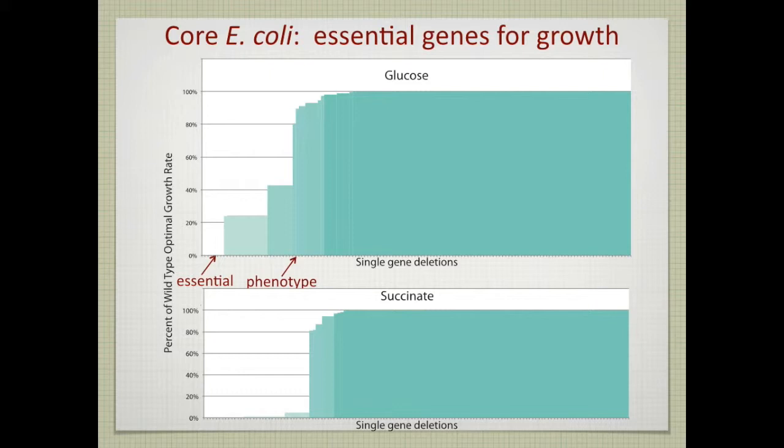Then you get a group of numbers from the optimization that look like this. They are smaller than what the wild type grows at. So removing the gene is predicted to retard growth. So you get a phenotype, but it's not a lethal phenotype. It's a viable phenotype, but it's predicted to be worse than the performance of the wild type. And then you normally get this. You get a lot of genes that can be removed, and there's really no effect on the growth state that you're trying to compute.